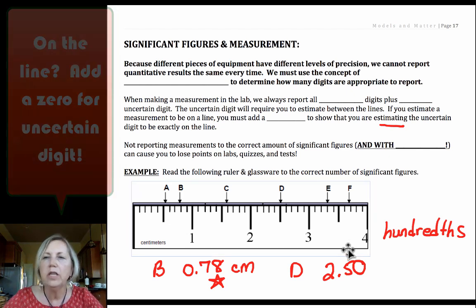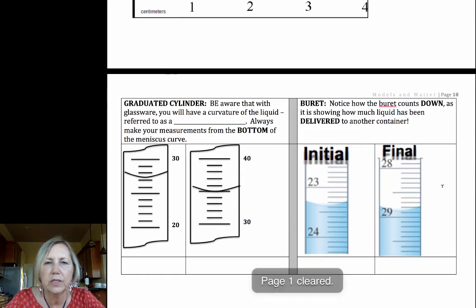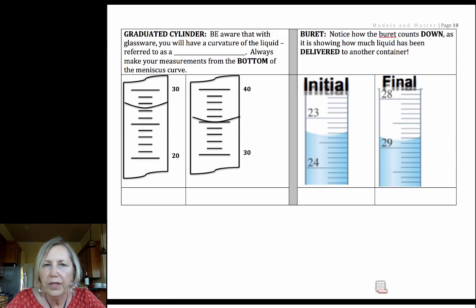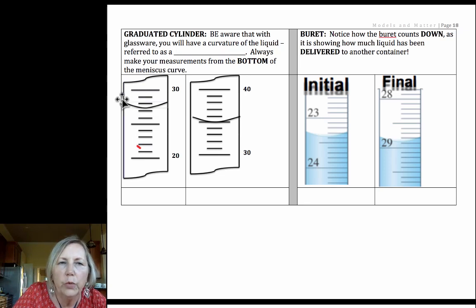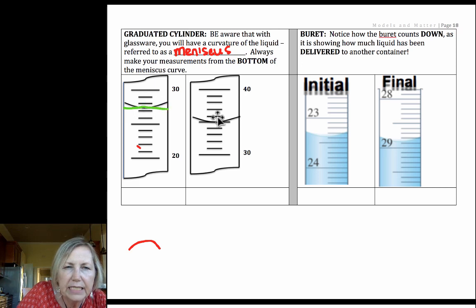So if you define your lines, that can help you make sure you're reporting everything to the correct number of significant figures. Now let's look at a graduated cylinder. You have to be careful with these. They're not a nice firm line like a ruler. With water, we end up with an upward curve. With mercury, you actually have a downward curve. But this is called a meniscus. And for any aqueous base that you'll be dealing with, we're always going to want to measure at the bottom of that meniscus.